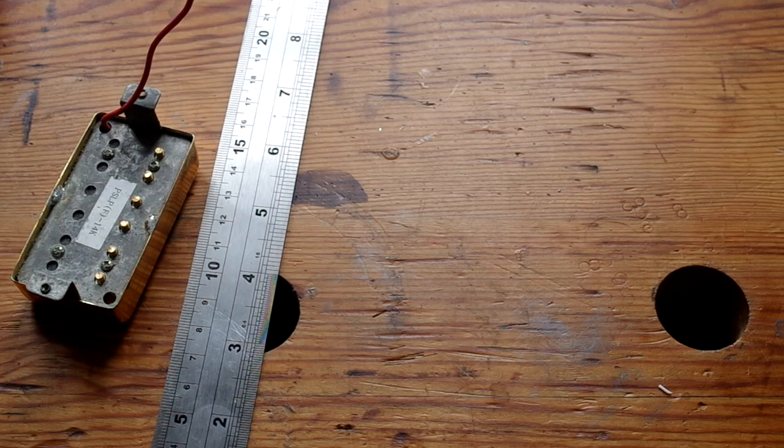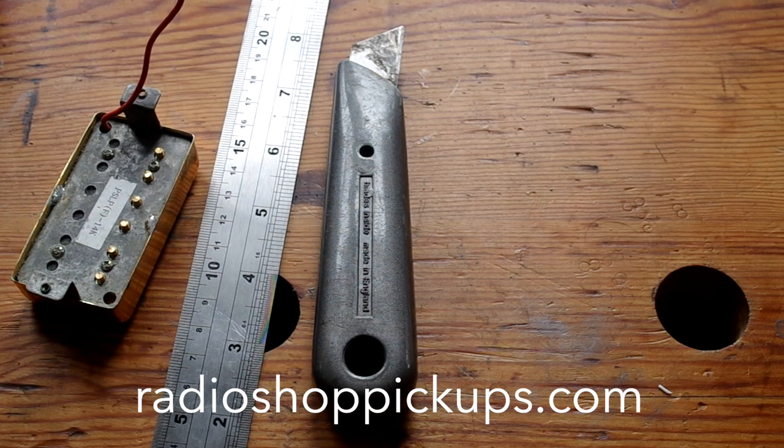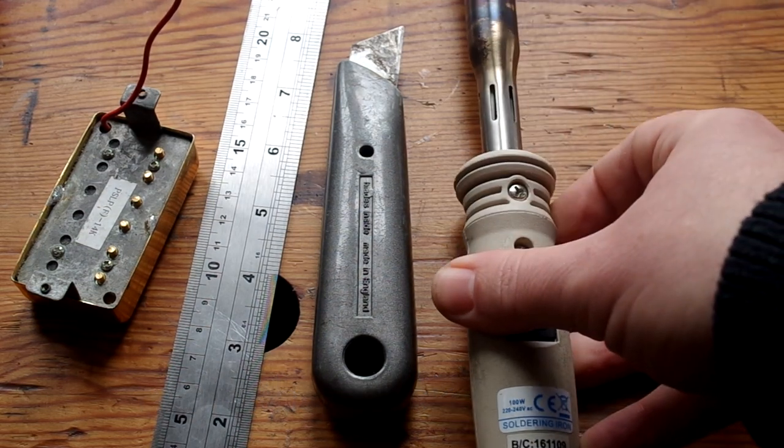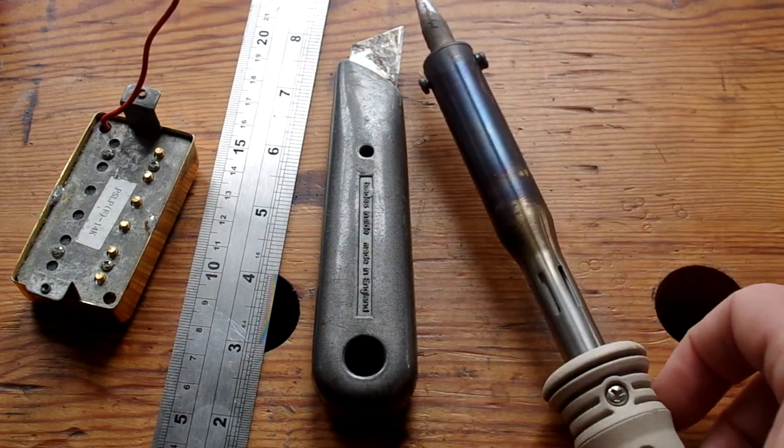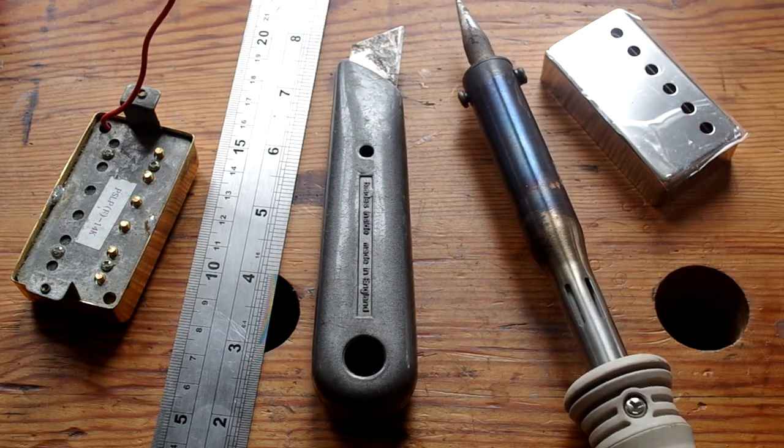You're going to need the humbucker obviously. You're going to need a ruler to check that it's actually going to fit. I'm going to use a Stanley knife, what we call it here in the UK, which is a hard enough knife to actually get the solder free on the cover.